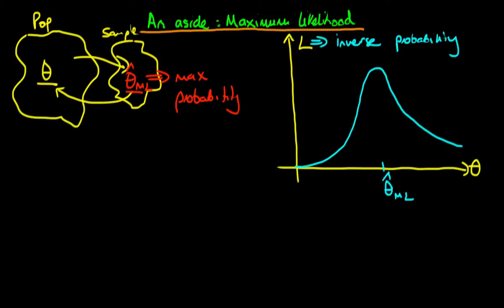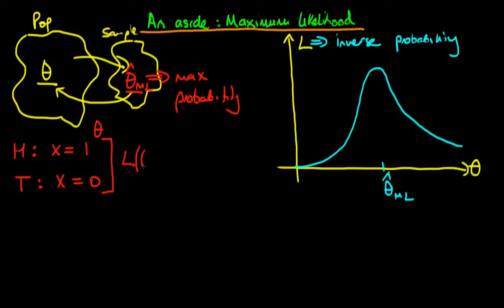Let's think about a particular example: flipping a coin. If the coin comes up heads, our random variable takes on a value of one; if tails, zero. We're trying to make inferences about the probability of a head, which I'll call theta. We can write down the likelihood function as a function of theta given x as theta to the power x times one minus theta to the power one minus x. This is just a Bernoulli likelihood.